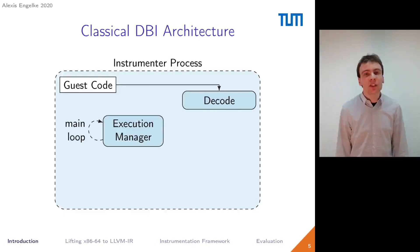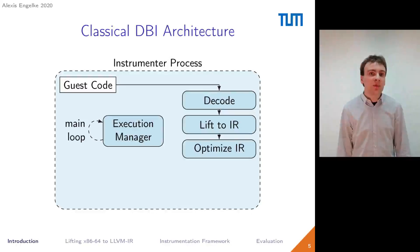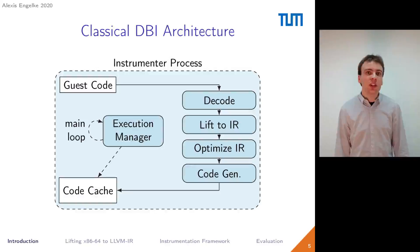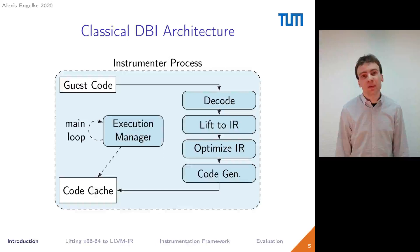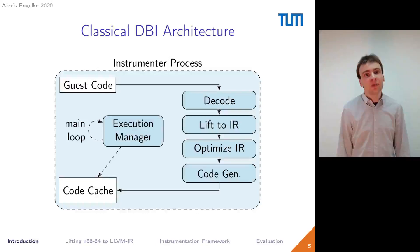The execution manager decodes a bunch of instructions, lifts them to its own intermediate representation, performs some instrumentation, then optimizes this code representation, and generates new machine code. This machine code is stored in the so-called code cache where it can be executed. Once a chunk of code finishes executing, the execution manager determines the next address to be executed and repeats the whole process until the program is finished.